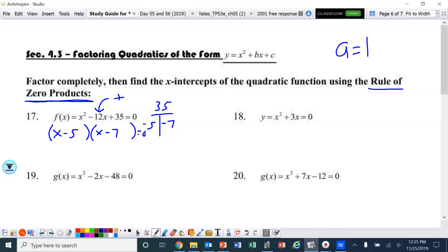Now remember, this has to equal 0 in order to factor it. The zero product property says what makes x minus 5 equals 0 and what makes x minus 7 equals 0. That would be positive 5 and positive 7. It does not say that we need to write these as ordered pairs. So x equals 5, 7.